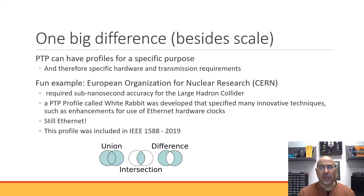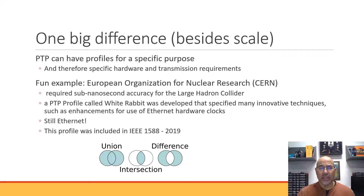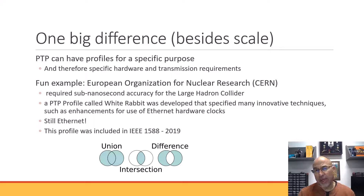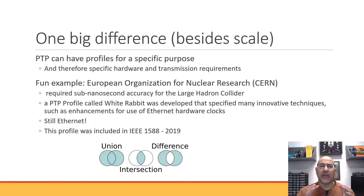One of the big differences between PTP and NTP, besides the scaling, is that you can create a profile for PTP. A profile designates the design and operational requirements of a particular PTP implementation. A fun example is from the European Organization for Nuclear Research, or CERN, famous for the Large Hadron Collider. They created a profile called White Rabbit because they're measuring stuff on a scale unimaginable to most of us. It included specialized Ethernet hardware clocks - same stuff we're talking about, just tuned with some tweaks to the network implementation.